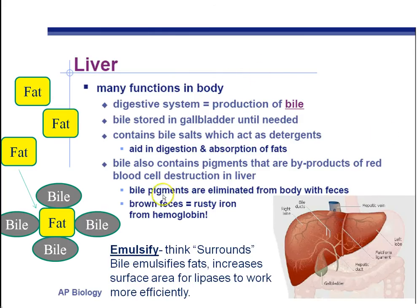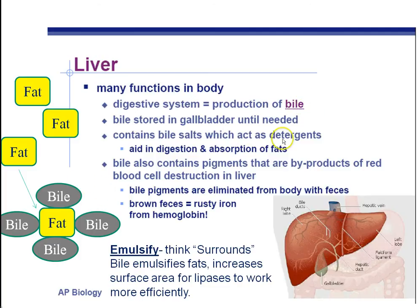Where we left off was with the liver, and the liver is one of your digestive organs, as well as the pancreas. Remember that the liver produces something called bile. Bile acts like a detergent — it surrounds the fat droplets and makes it easier for lipases, enzymes, to break down the fat into smaller molecules.